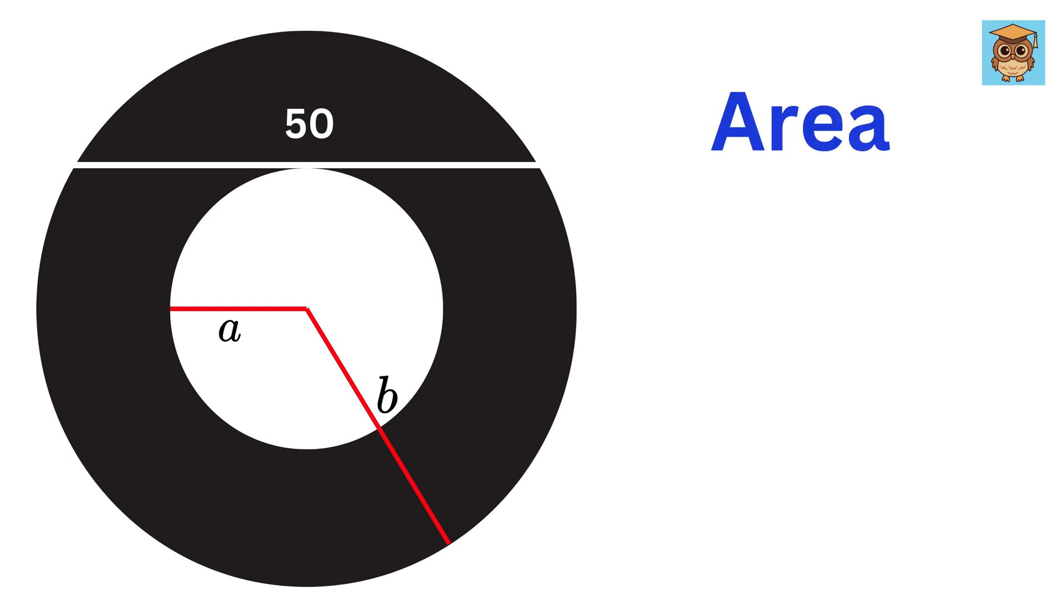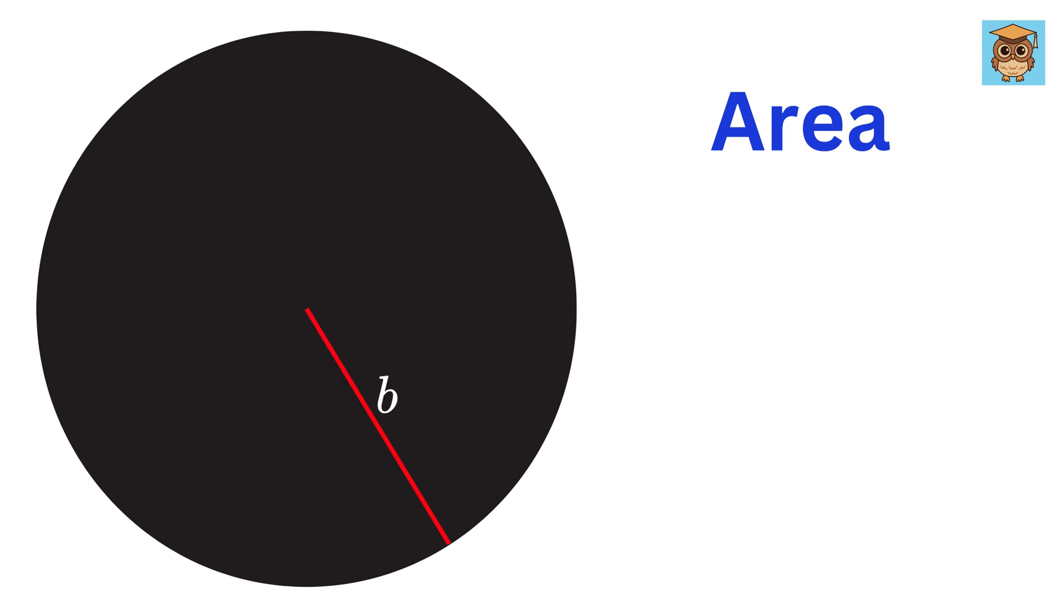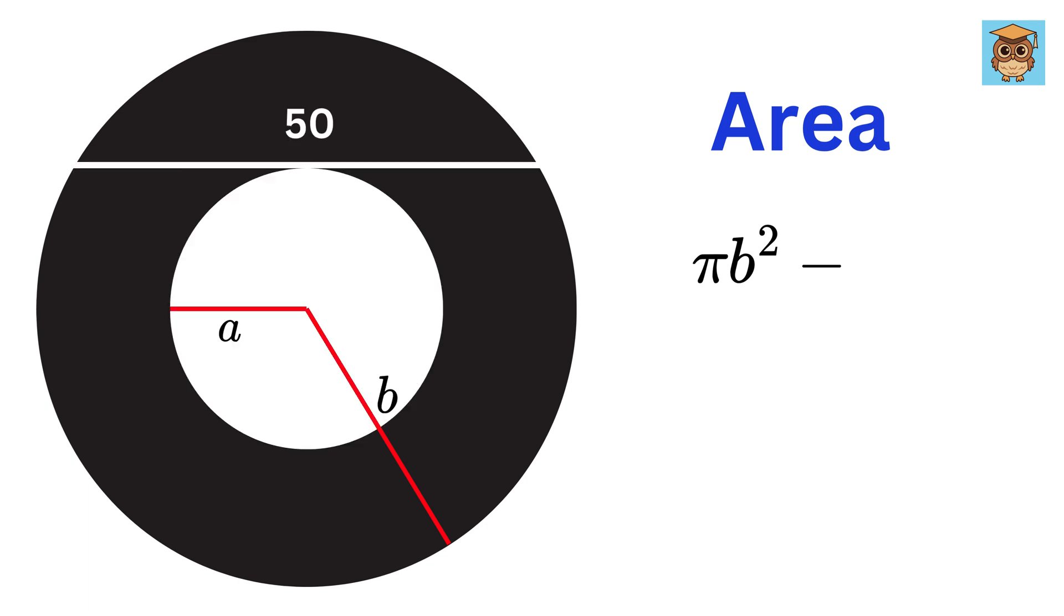So, the area of this donut, or the shaded region, will be the area of the outer circle, or π times b², minus the area of the inner circle, or π times a². Take π as common, and this will become π times (b² - a²). There. Great.